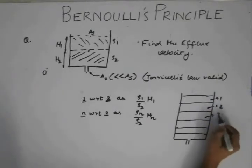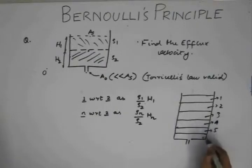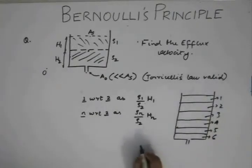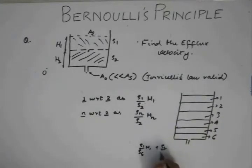this is 2, 3, 4, 5, 6. So with respect to 6, this equivalent height will be rho1 by rho6 into h1. This height will be rho2 by rho6 into h2 and